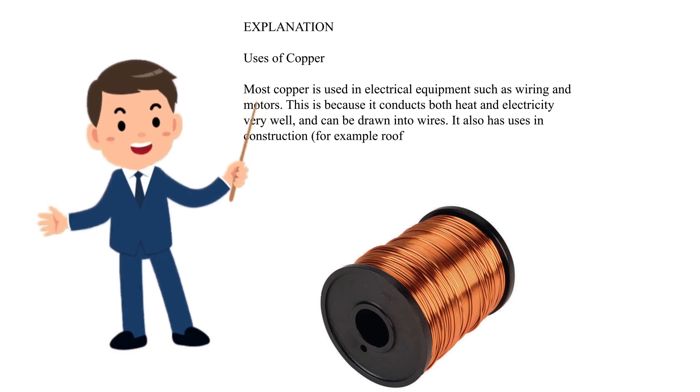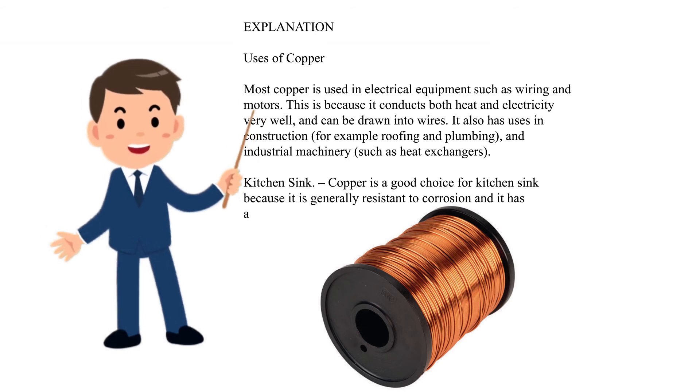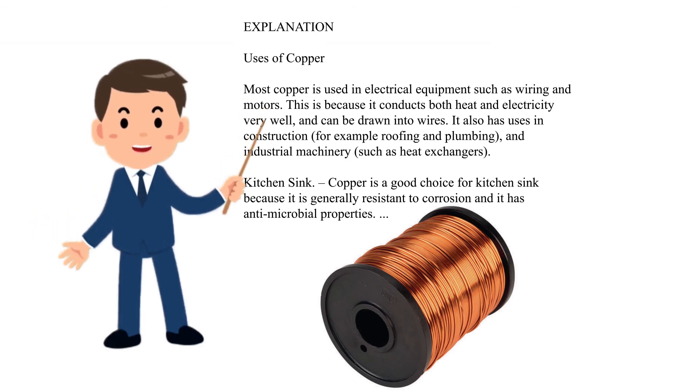It also has uses in construction, for example roofing and plumbing, and industrial machinery, such as heat exchangers. Kitchen sink. Copper is a good choice for kitchen sink because it is generally resistant to corrosion and it has antimicrobial properties.